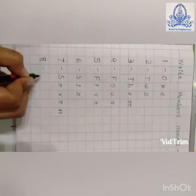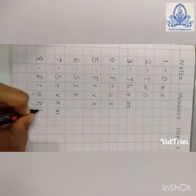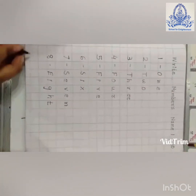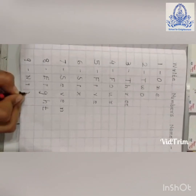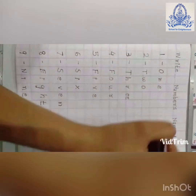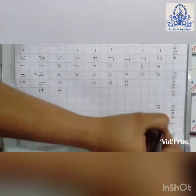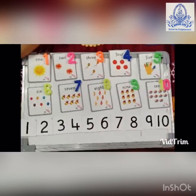8: E, I, G, H, T — 8. Number 9: N, I, N, E — 9. Now, tell me the spelling of 10. You have to write many times in your notebook like this. Okay, my dear children. Hope you do more and more practice of number names. Thank you.